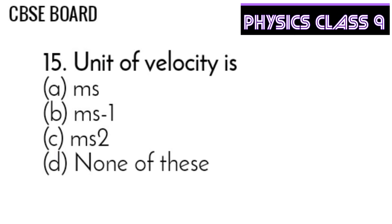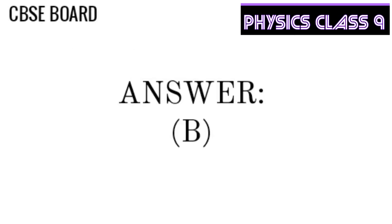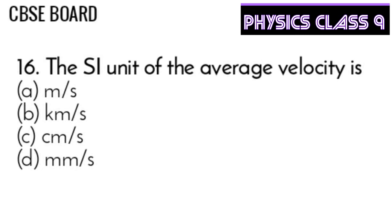Question 15: The unit of velocity is meter per second, meter per second, meter per second, or meter per second. Option B is correct — meter per second. Question 16: The SI unit of average velocity is meter per second, kilometer per second, centimeter per second, or millimeter per second.